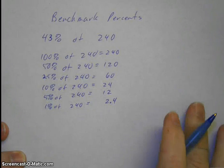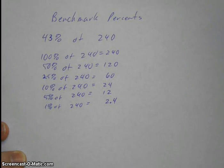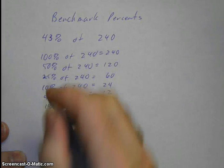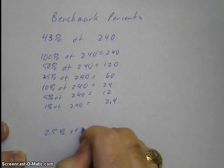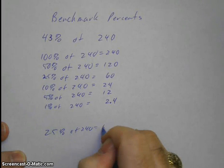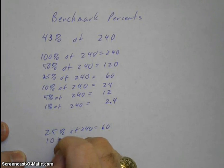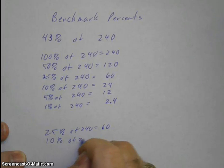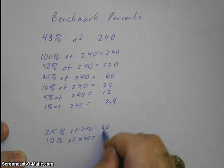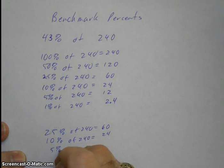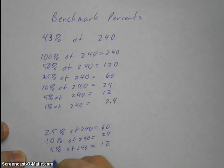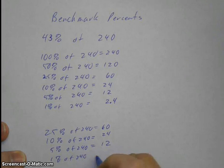So now if I want to know 43%, I just add together the things I need to make 43. So that would be 25%, plus a 10%, that makes 35%. Plus a 5%, that gives us 40%. And then three 1% will give us 43%.